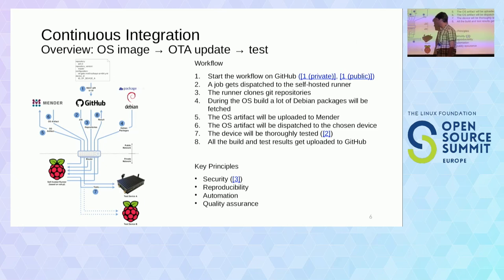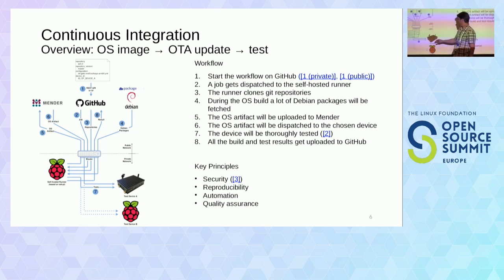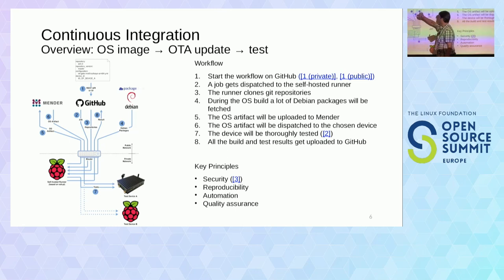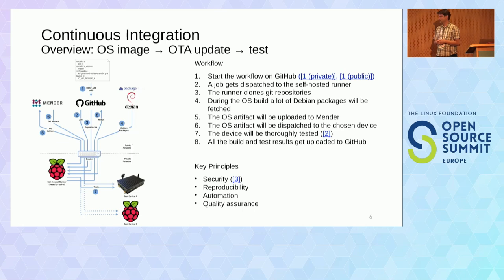As the second-to-last step, we run a test suite. Since we're on the same network, we can easily SSH into the device and run tests. In my case I'm using TestInfra. Finally, when everything is done, the result goes back to GitHub and we see that we have a new operating system image that passes all the tests. It's extremely convenient — no manual steps involved.